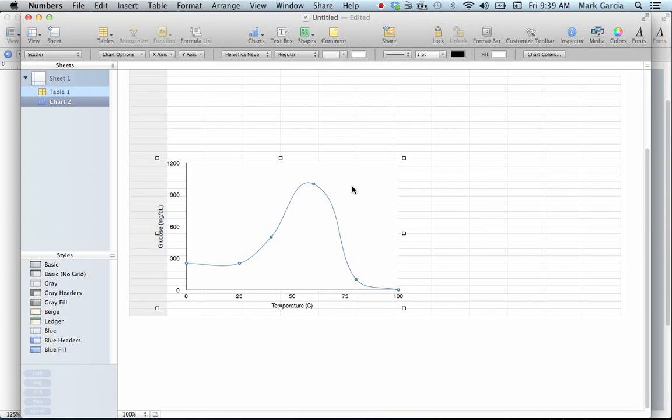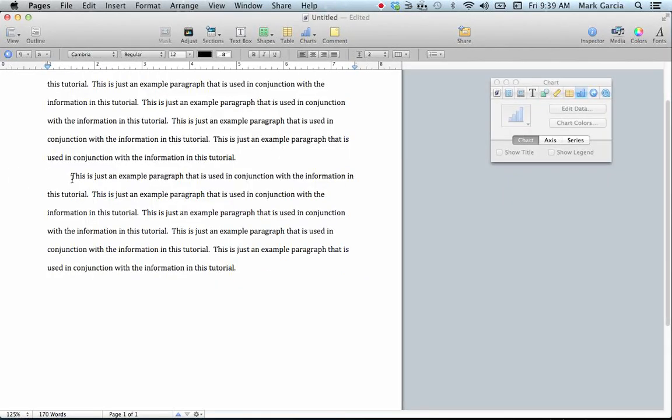So I've got my graph here. I've already built it. I'm going to make sure I select the whole thing, so that is with these squares at the edges. I'm going to copy it by pressing Command-C, and I'm going to come over into my Pages document.